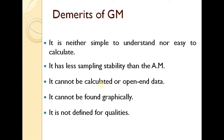The demerits of GM: it is neither simple to understand nor easy to calculate. It has less sampling stability than the arithmetic mean. It cannot be calculated for open-end data. It cannot be found graphically. It is not defined for qualitative data.